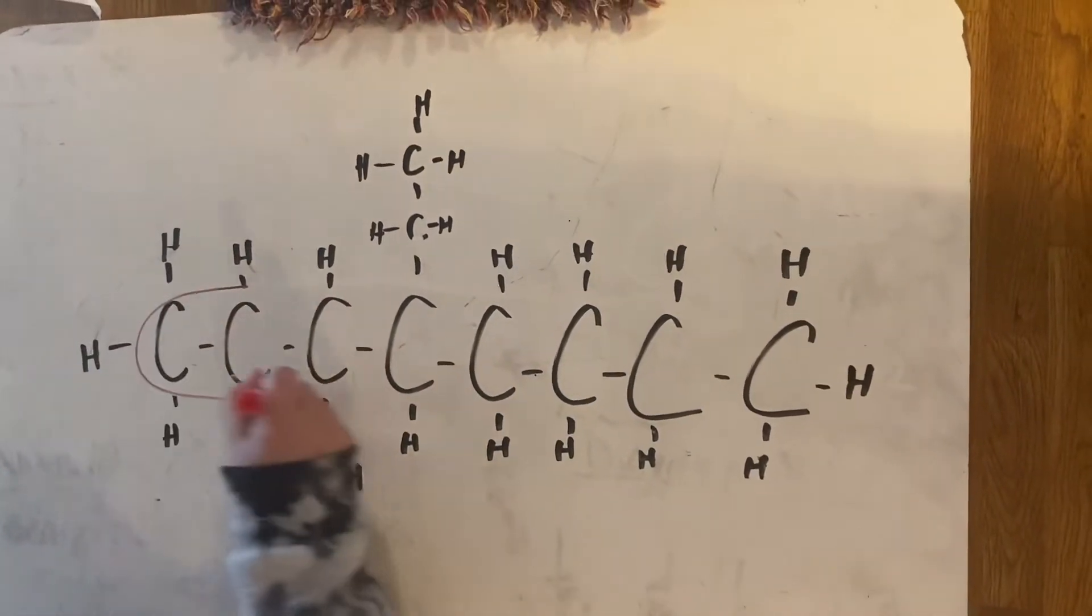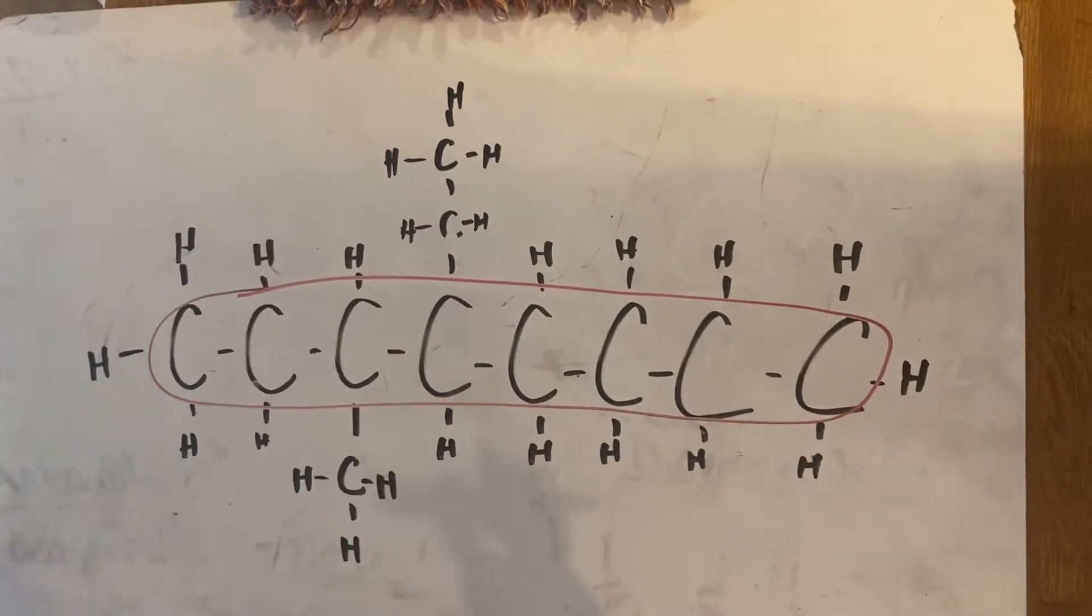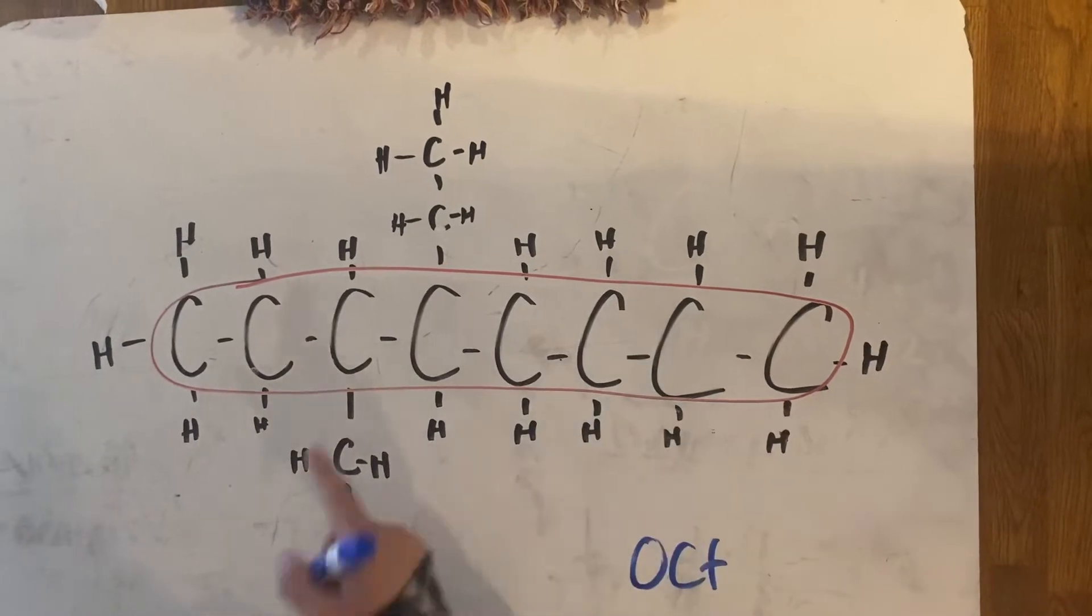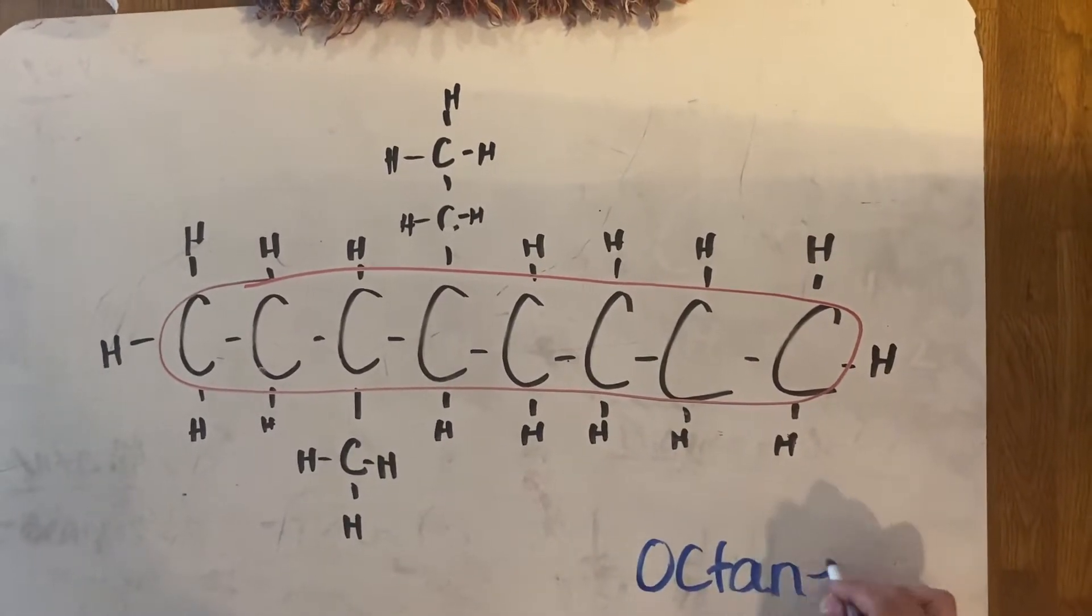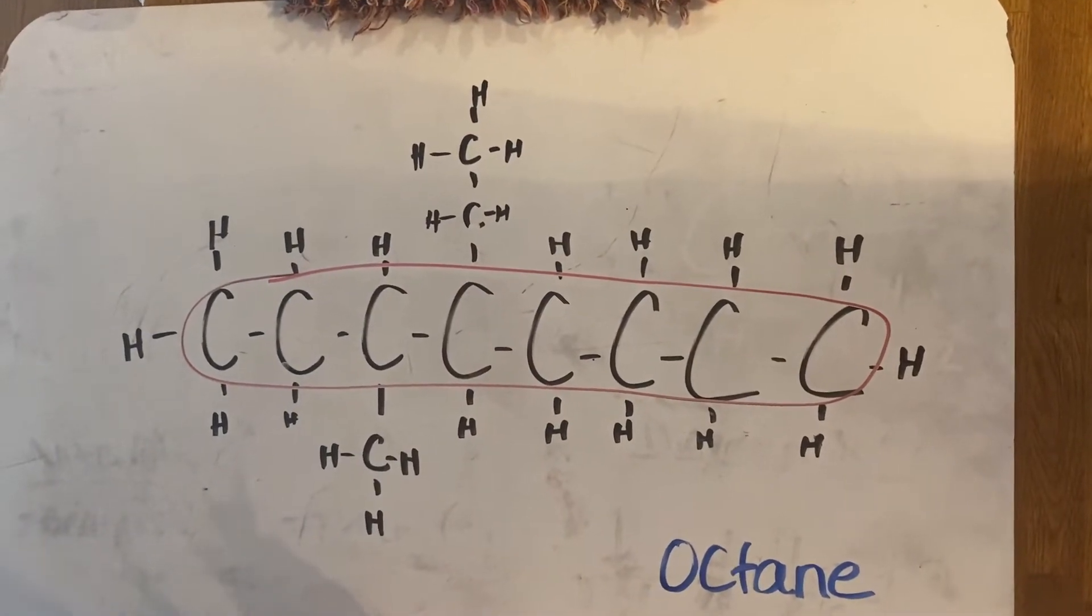My biggest chain is these eight carbons connected with single bonds only. So I look up on Table P, and the prefix for eight is oct. Since they're all single bonds, it's octane. Now I have to deal with the fact that we have these groups coming off the main chain.